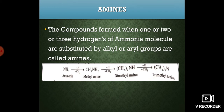First of all, what are amines? Amines are the compounds formed when one, two, or three hydrogen atoms are removed from the ammonia molecule and substituted by alkyl or aryl groups. For example, starting from NH3, replacing one hydrogen atom with one alkyl group — CH3 — gives us methyl amine.